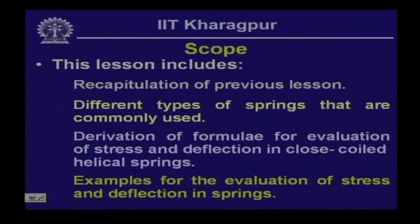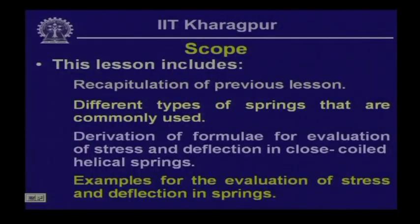The scope of this lesson includes recapitulation of previous lessons. In the previous module we discussed stability of columns, and I gave some questions at the end of that lesson. We will discuss the answers to those questions and also look into the different types of springs commonly used, including the derivation of formulae for evaluating stress and deflection in close coiled helical springs.